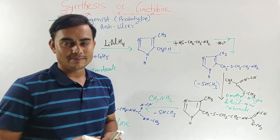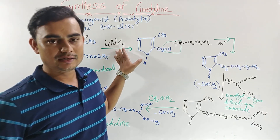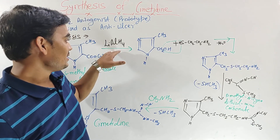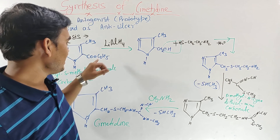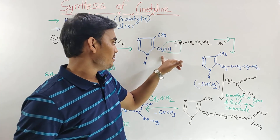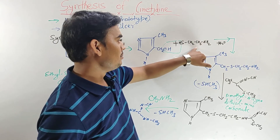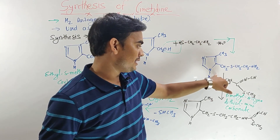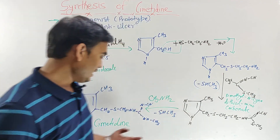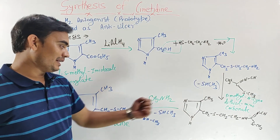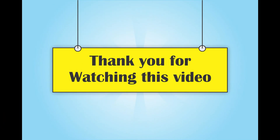This is the synthesis of Cimetidine. To summarize: ethyl-5-methyl-imidazole-carboxylate reacted with Lithium Aluminium Hydride (LiAlH4) for reduction to give a CH2OH intermediate. When reacted with aminoethylthiol, an intermediate product is obtained. When reacted with dimethyl cyano dithioiminocarbonate, a new intermediate is formed. Finally, when reacted with methylamine, the final product Cimetidine is obtained. Thank you.